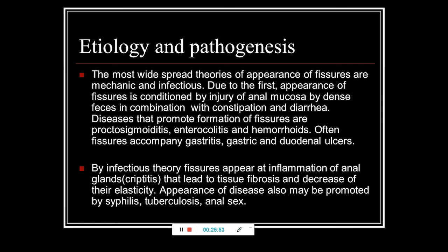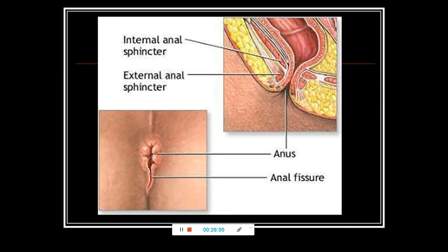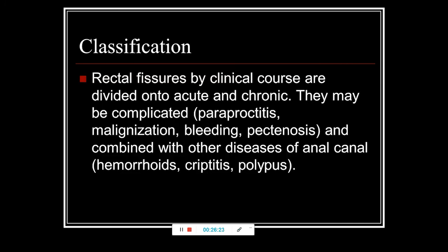The fissure almost always involves both mucosa and skin of the anal channel. Classification by clinical course: acute and chronic. Complications include periproctitis, malignancy, bleeding, pectinosis, and combination with other diseases such as hemorrhoids, proctitis, or polyps. The acute fissure lasts up to one month — it is painful, especially after defecation, and may be accompanied by bleeding. If the patient comes in time, conservative treatment is usually possible.